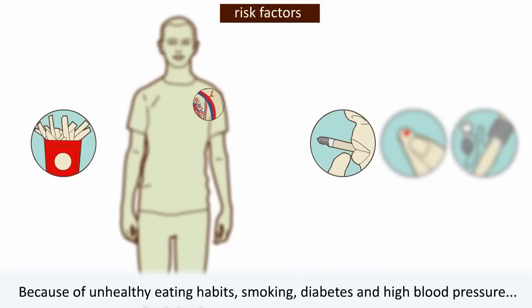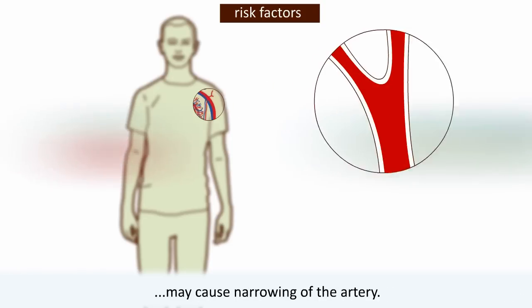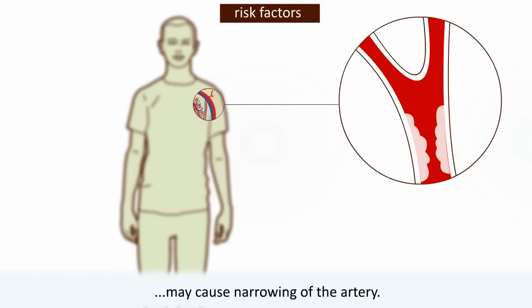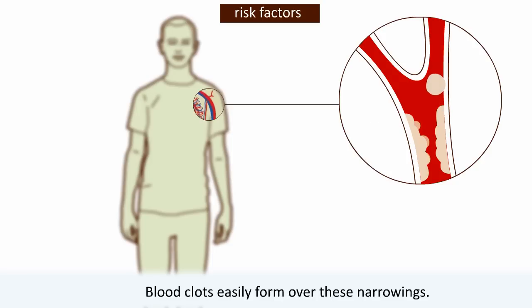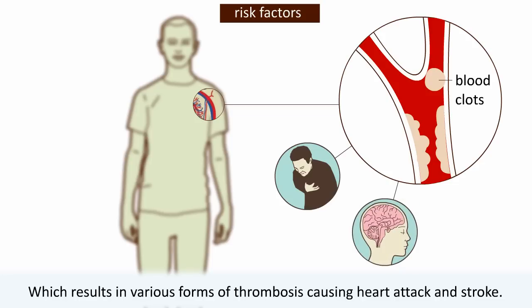Damage normally occurs in the arteries and veins because of unhealthy eating habits. Smoking, diabetes, and high blood pressure may cause narrowing of the artery. Blood clots easily form over these narrowings, which results in various forms of thrombosis causing heart attack and stroke.